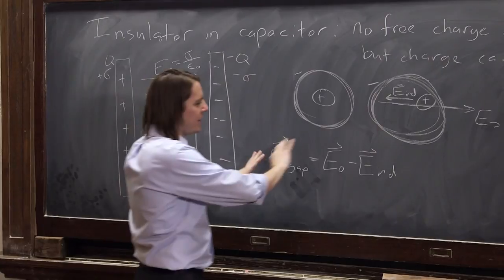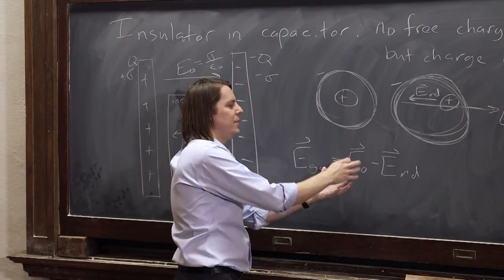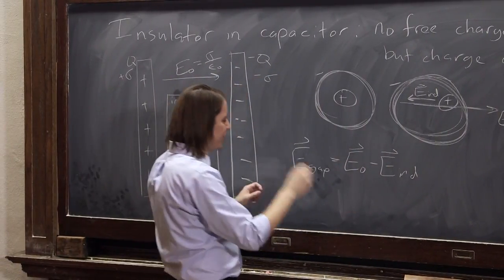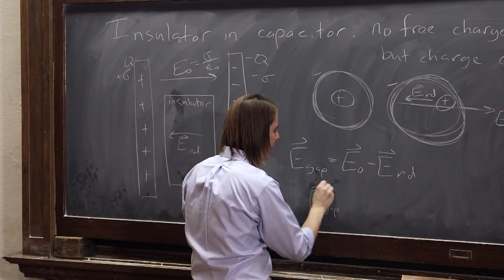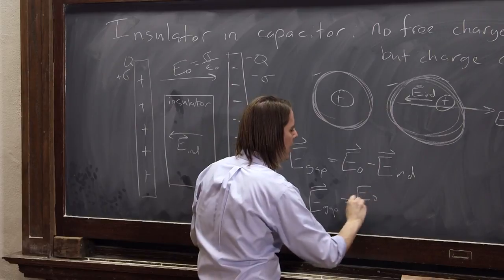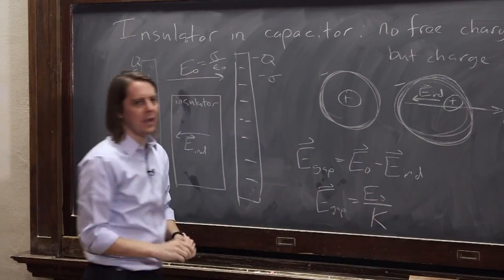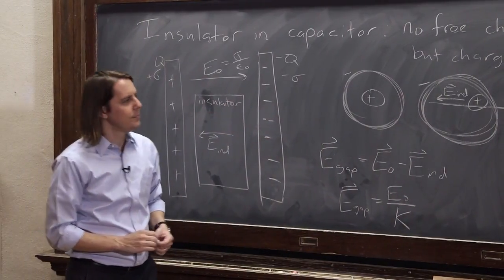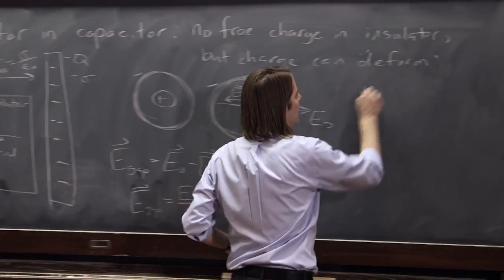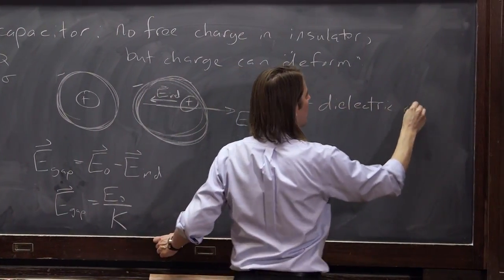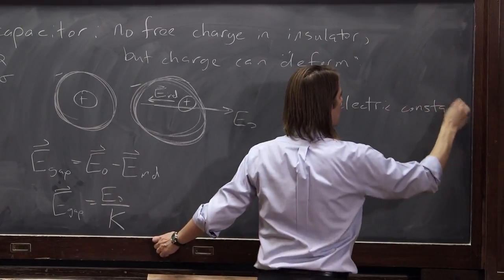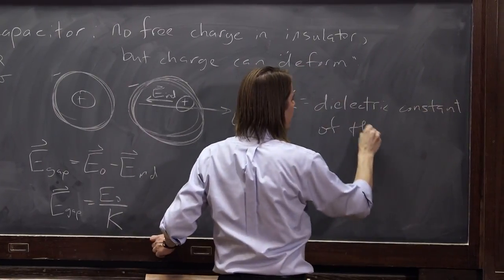We usually don't write it this way in terms of there's the original field minus something. It's usually you turn things around with a bunch of algebra we don't need to do, and we say E in the gap equals E naught over a big thing called K, the dielectric constant. So K of the insulator.